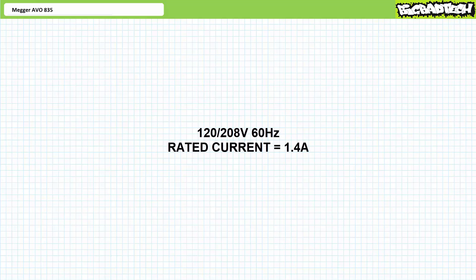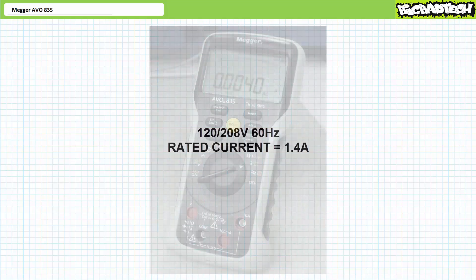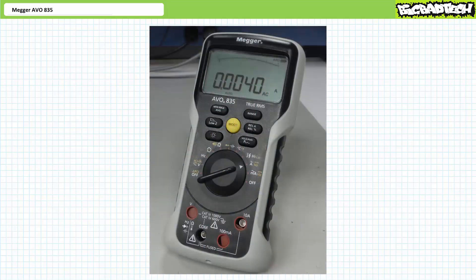Inrush is typically six times rated current, so we might reasonably expect an initial surge of six times 1.4 amps, roughly 8.4 amps, upon closure of the manual motor starter. This is well above the 100 milliamp range and inside the 10 amp range. We need to use the ammeter 10 amp range. Turn the selector switch to amps.